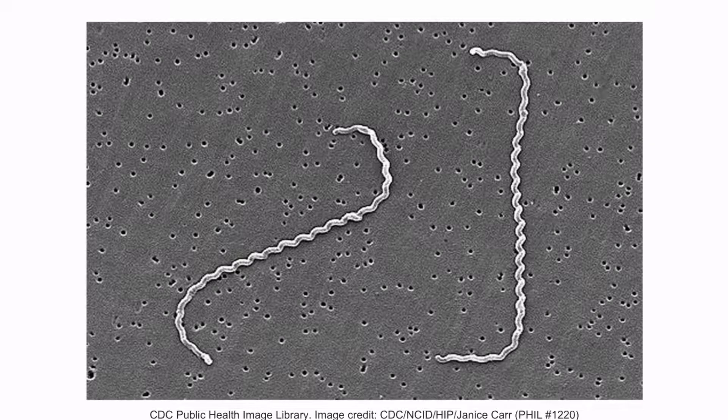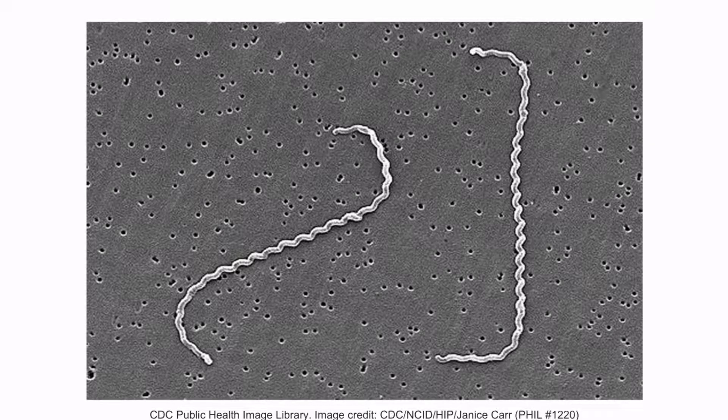This is a scanning electron microscope image of Leptospira interrogans. As you can see, the organism has the characteristic spiral shape.